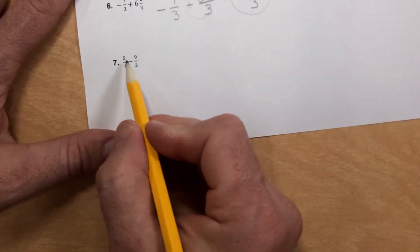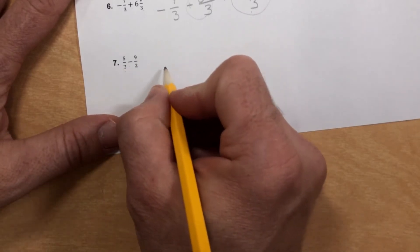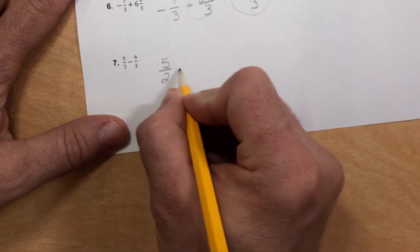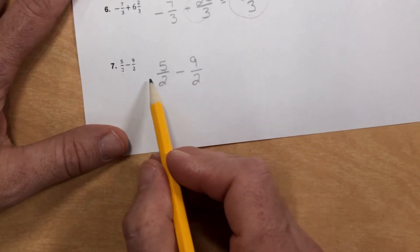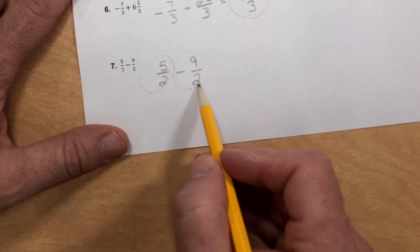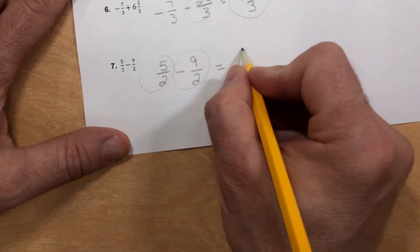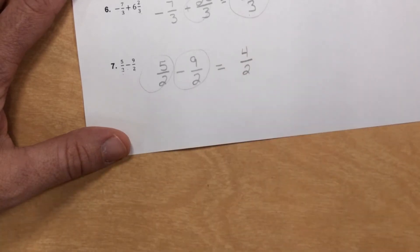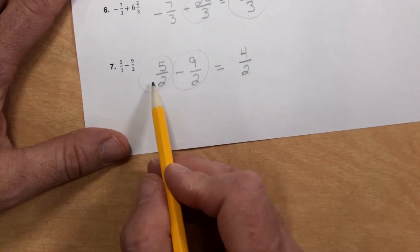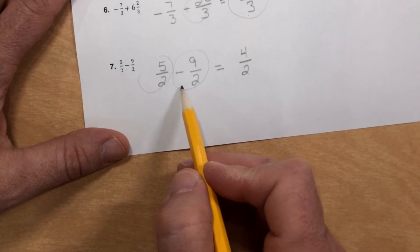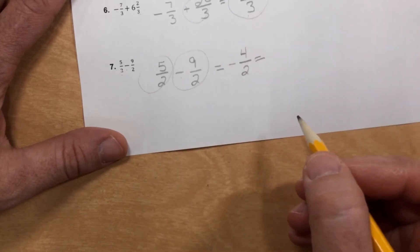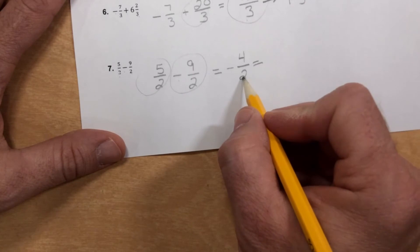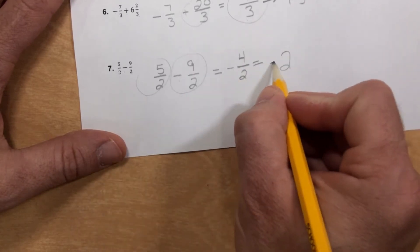Number 7. 5 halves minus 9 halves. Well, this is nice. They're both already improper fractions. And they both already have common denominator. We look at this problem and we say to ourselves, different sign. Here's a positive. Here's a negative. So I subtract these two. 9 minus 5 is 4 over 2, of course, because the denominator stays the same. But don't stop there. That's where a lot of kids make their mistake. We keep the sign of the larger absolute value. And 9 over 2 is a bigger absolute value than 5 over 2. So we keep it negative. We do have to turn that into a mixed number, although it actually goes into an integer this time. 2 goes into 4 exactly two times. Don't forget to keep the negative sign.